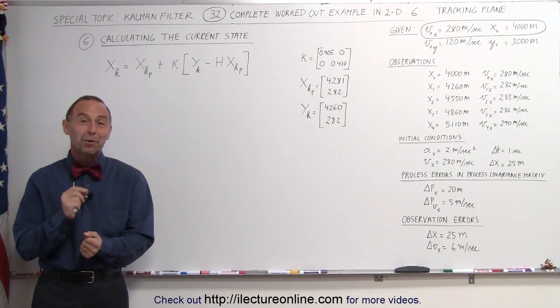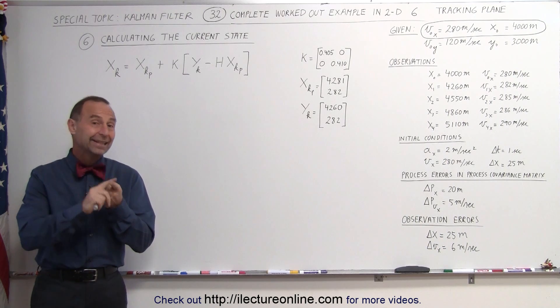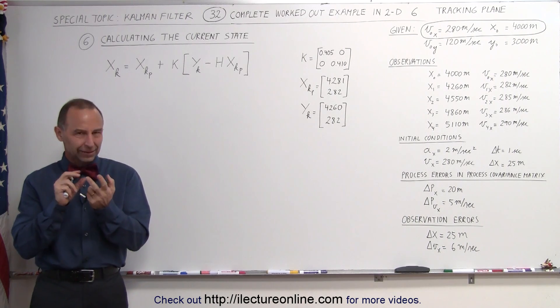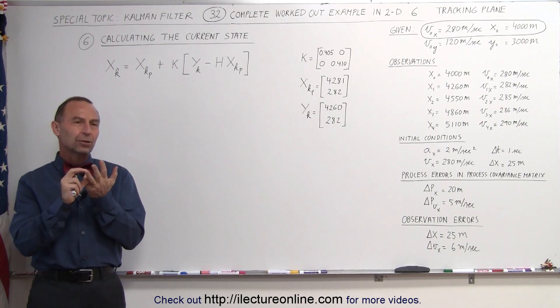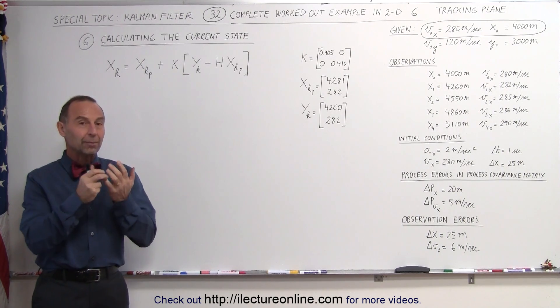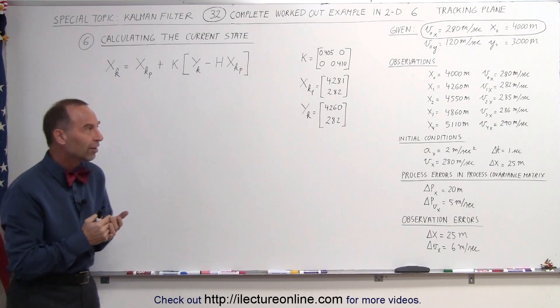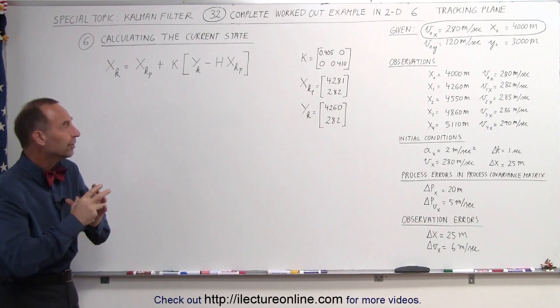Welcome to Electroline. Now we're ready to calculate the current state. Remember, we calculated the predicted state, then we calculated the Kalman gain, we calculated the covariance matrix, then we brought in the observations, the observation of position or the measured position and velocity.